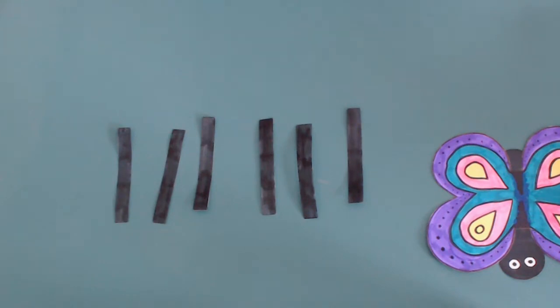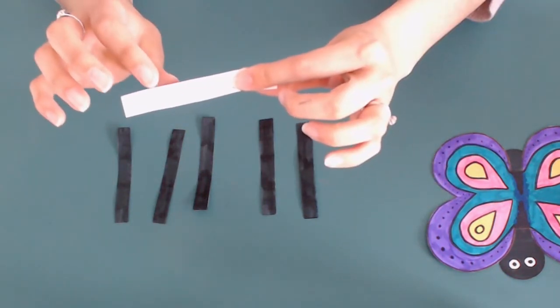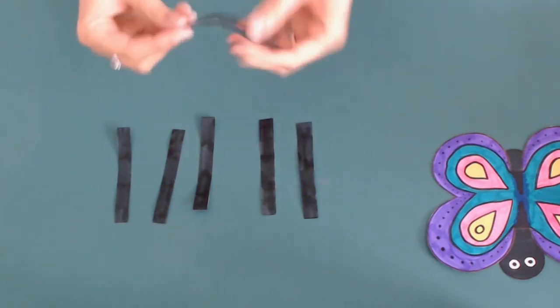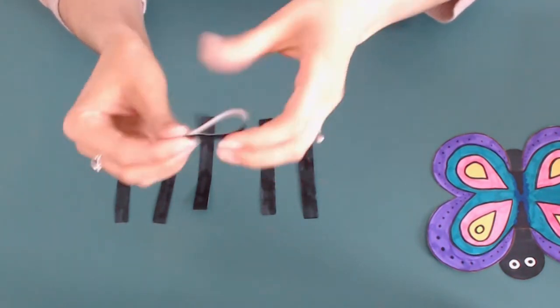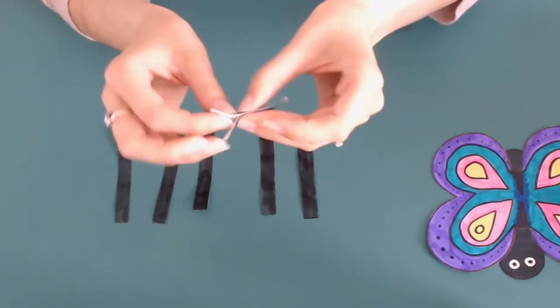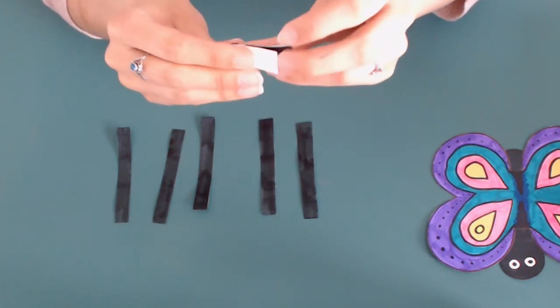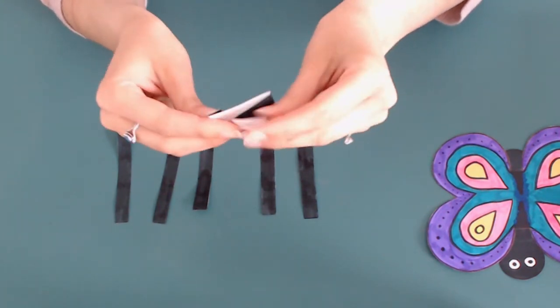Okay now that our legs are colored we're gonna go ahead and fold them. It's really simple. You take your leg, fold it in half, and then on one side you're gonna fold it just a little bit and on the other side a little bit more because that's the side that's going to end up glued to the body of the butterfly.